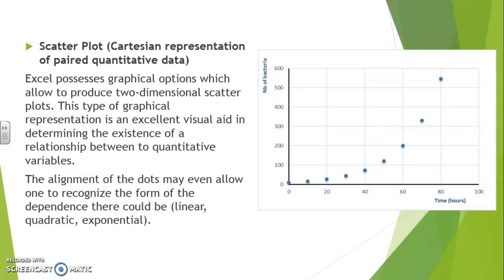Here is a dependency that looks of the exponential type. Again, this is a functional dependence where the number of bacteria grows exponentially with time.